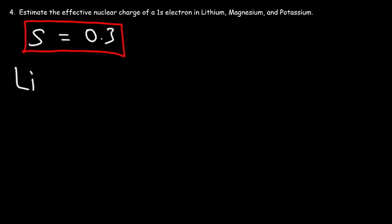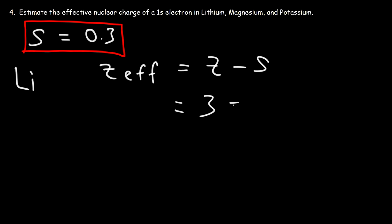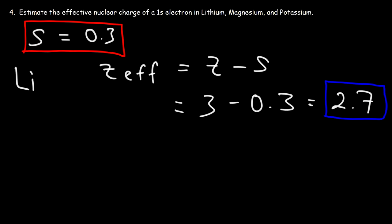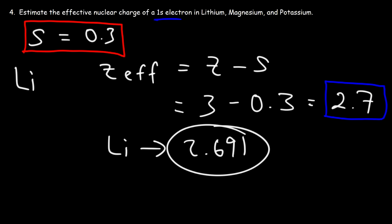Let's start with lithium. The effective nuclear charge equals Z minus S. Lithium has three protons so its atomic number is 3. 3 minus 0.3 is 2.7 — this is the estimation for the 1s electron in lithium. The actual value for lithium is 2.691, so 2.7 and 2.691 — that's close enough.